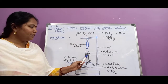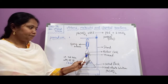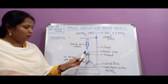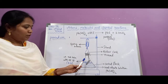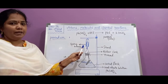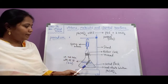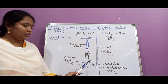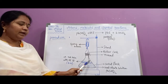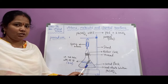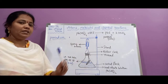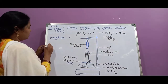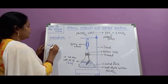Then close the mouth of the conical flask with a rubber cork. Measure the whole weight of the conical flask along with its contents using a spring balance. The weight you find at this point is the weight of the reactants.